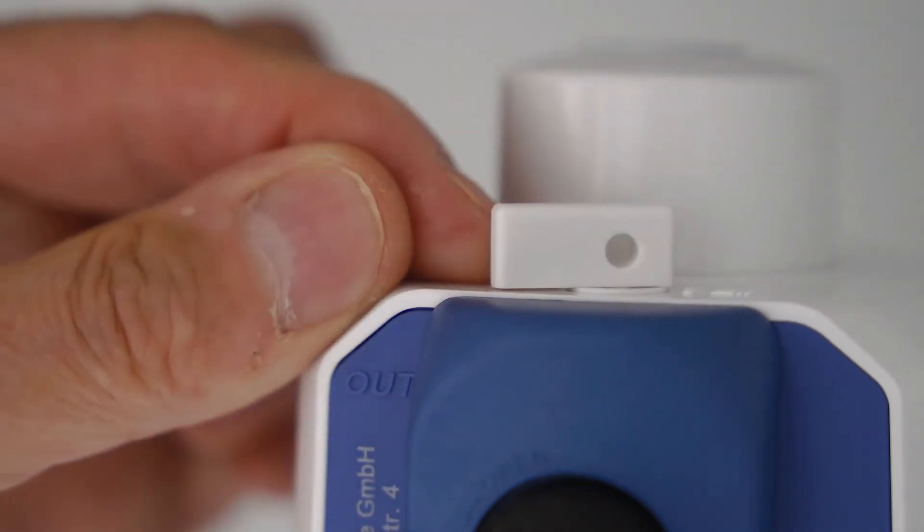At the top of the filter head you will find a small flush valve. Open the pin and rinse the filter with a minimum of two liters of water.